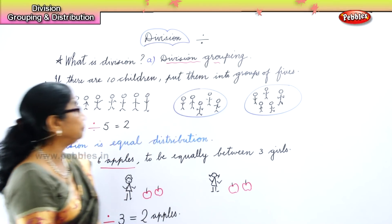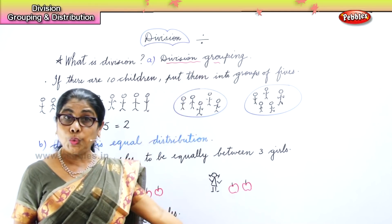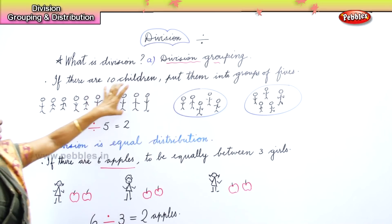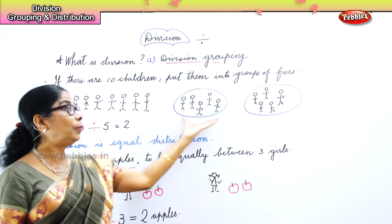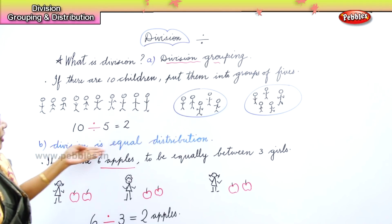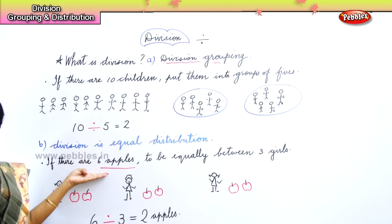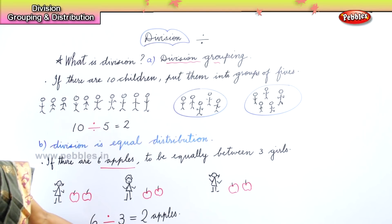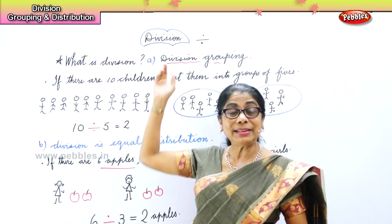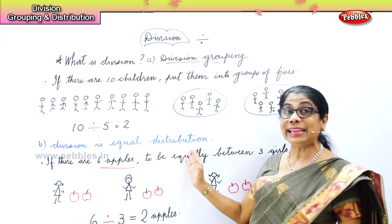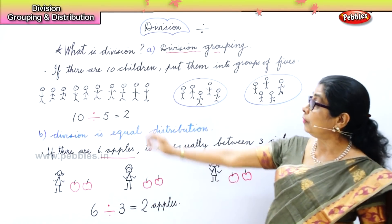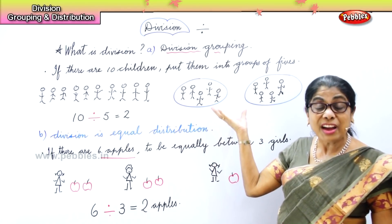Now we are looking at what is division, and we have done two here. Division is grouping — if there are ten children, put them into groups of five, so we have two groups of five and that is ten. Second, division is equal distribution — six apples to be shared equally among three girls, and each one gets two apples. Division is grouping: groups should be equal. Division is equal distribution: equally distributed. There are six apples to be shared equally among three children; ten children to be grouped into groups of five, and you get two groups.